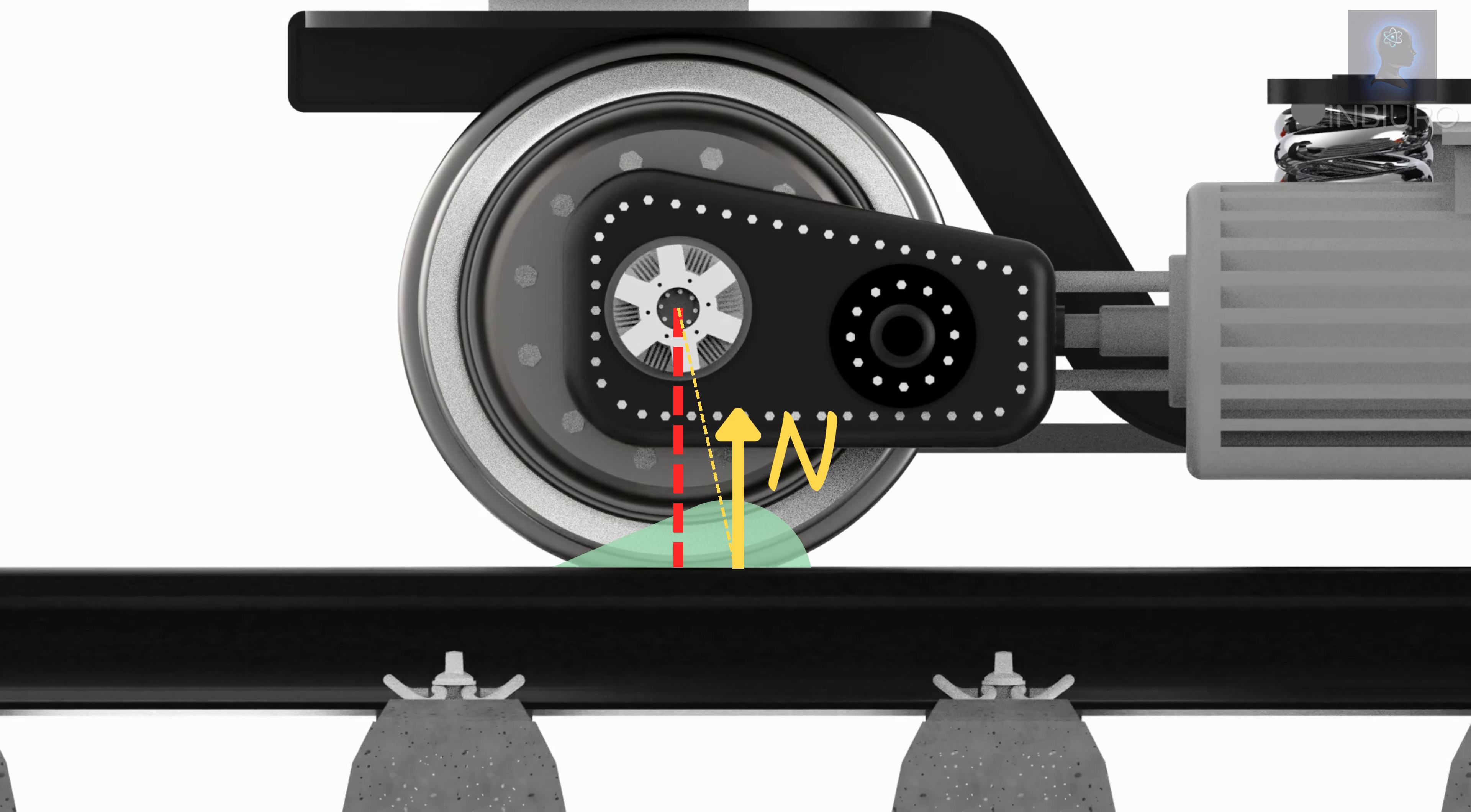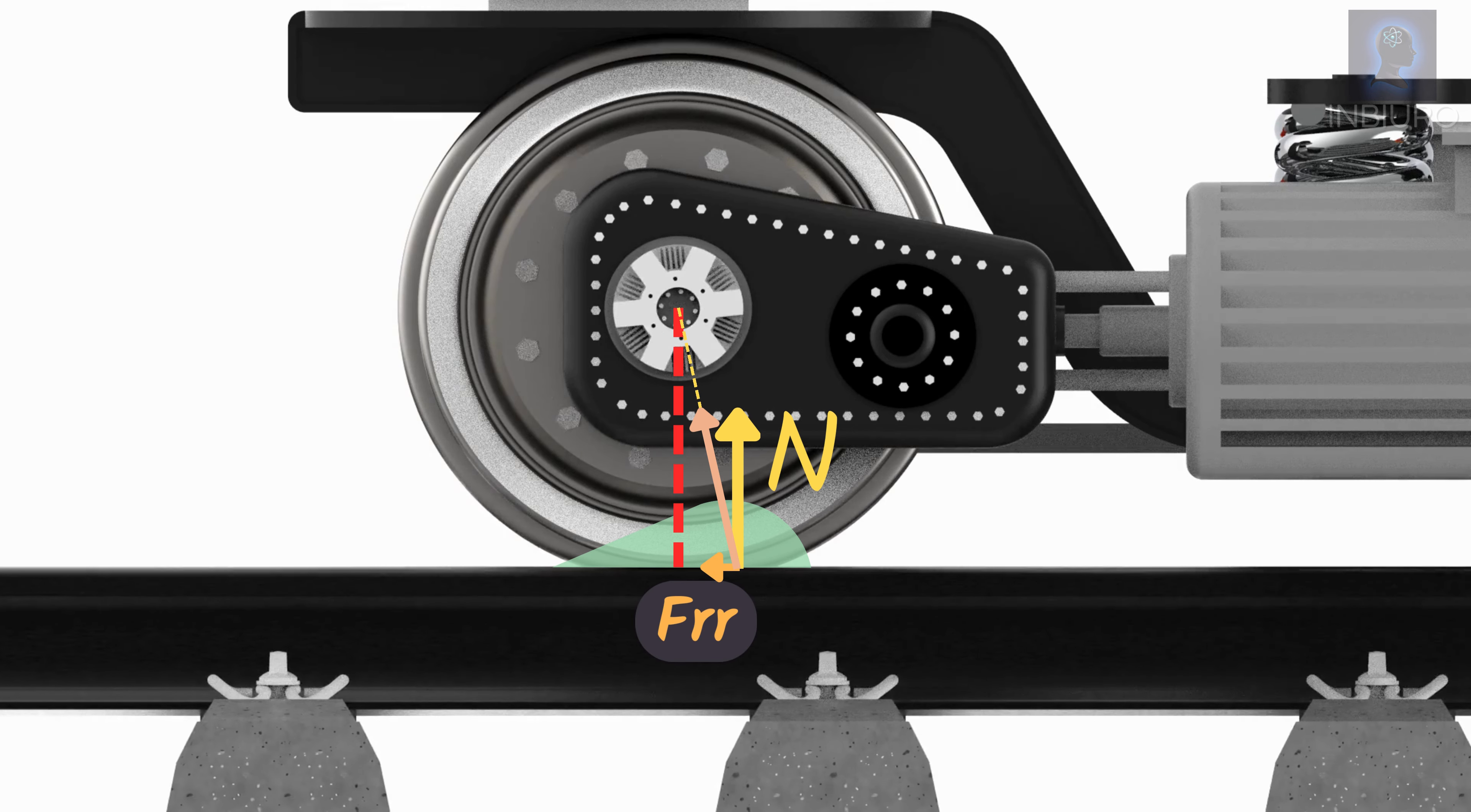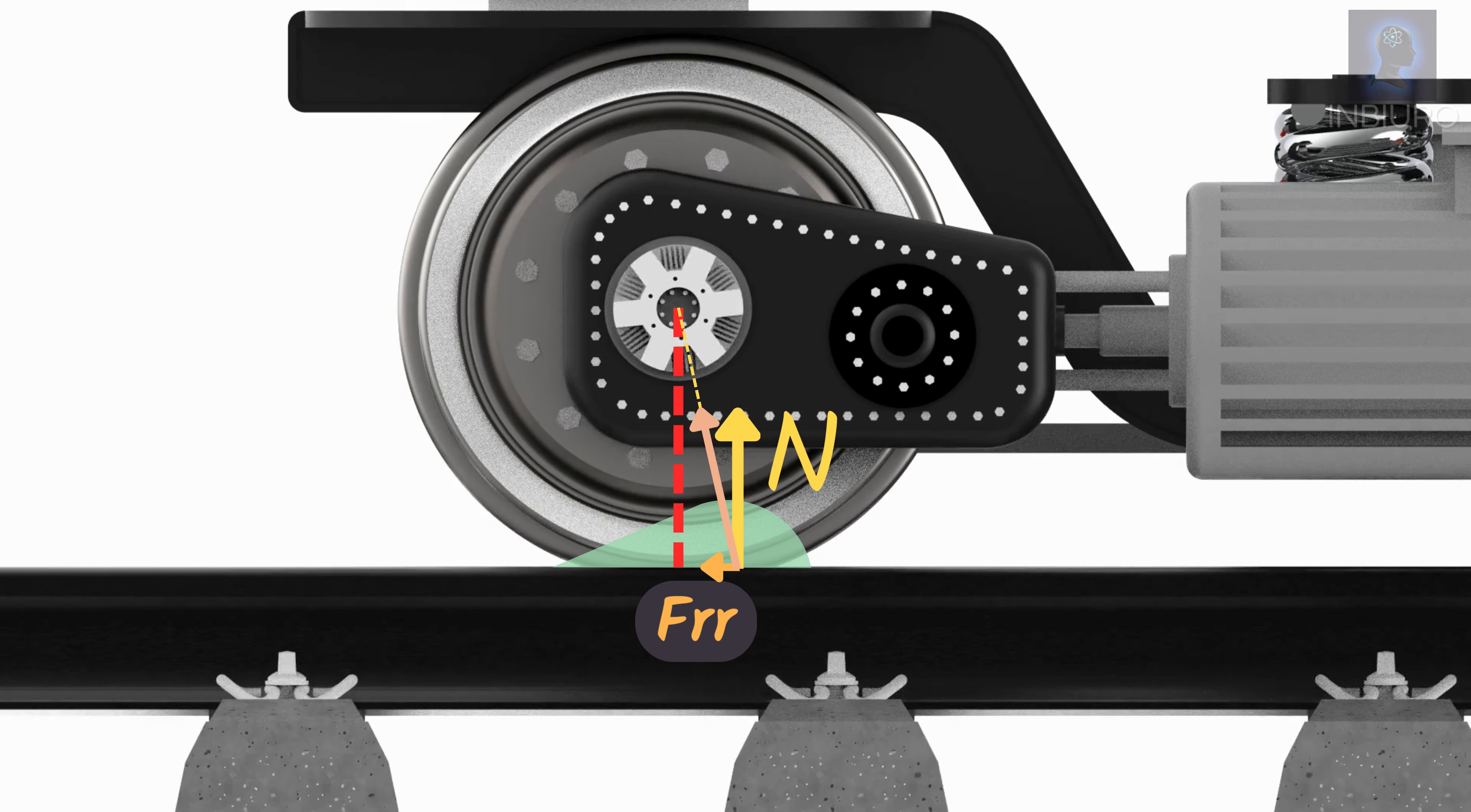This phenomena changes orientation of the total force of contact face where the vertical is still the load on the axle. The horizontal constituent of the contact force is the rolling resistance force that drags the wheel opposite to driving direction.